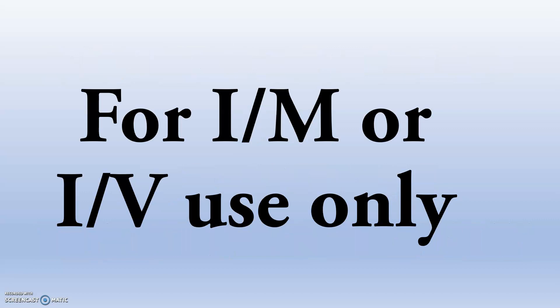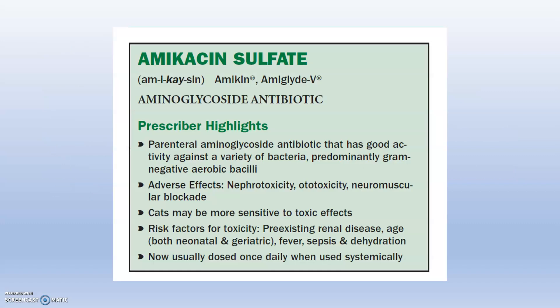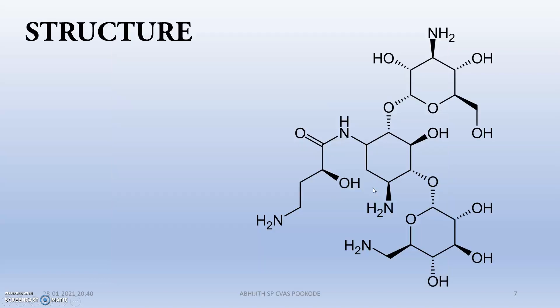For IM or IV use only. Amikacin is a semi-synthetic aminoglycoside used to treat many bacterial infections. It is the only agent used to treat gram-negative infections, especially caused by Pseudomonas species. Other brand names include Amikin and Amiglite. The adverse effects are mainly nephrotoxicity, ototoxicity, and neuromuscular blockade.